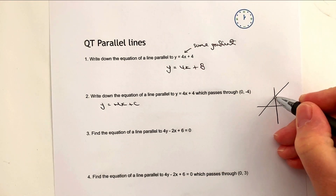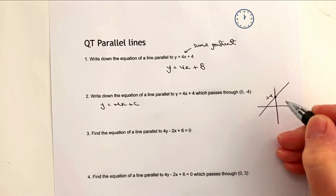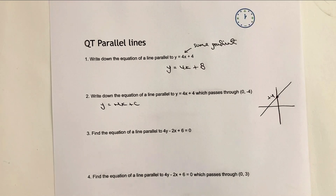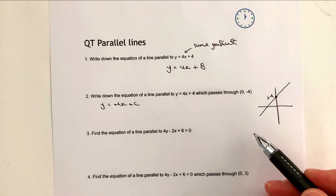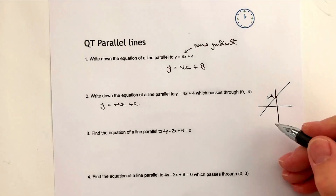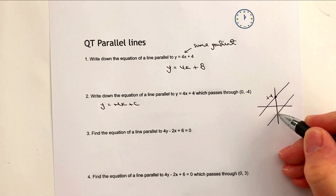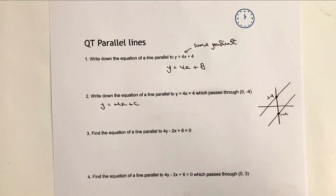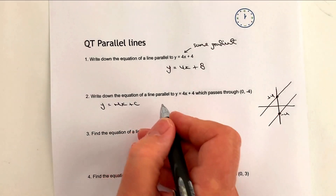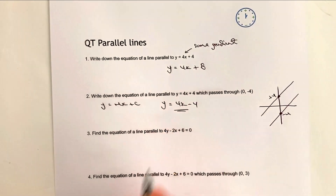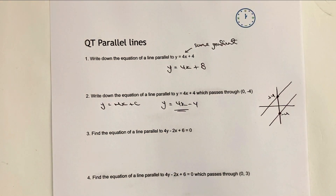They're asking us to write the equation of a line which is parallel — same gradient — but this time it goes through minus 4. So all we would write is y = 4x − 4, and that would be the answer to the question.